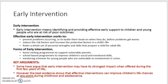Early intervention can also foster a whole set of personal strengths and skills that prepare a child for adult life. There are three main forms: home visiting programmes to support vulnerable parents, school-based programmes that improve children's social and emotional skills, and mentoring schemes for young people vulnerable to involvement in crime. Some argue that early intervention may have its strongest impact when offered during the first few years of life, and there is evidence to support that. However, there is also very strong evidence that effective interventions can improve children's life chances at any point during their childhood or adolescence.